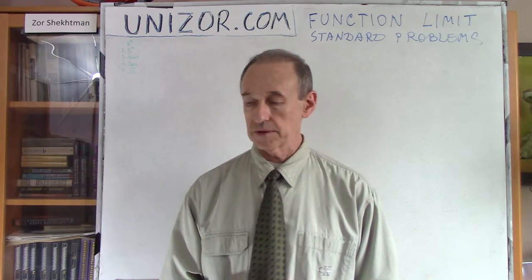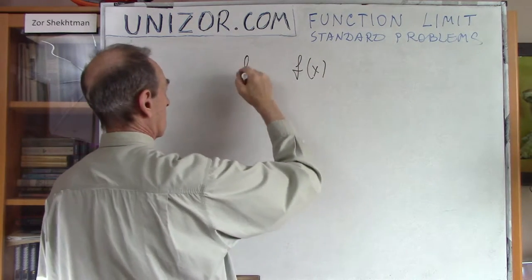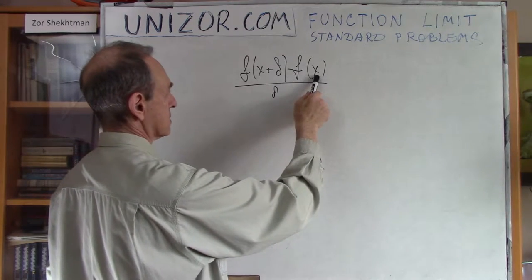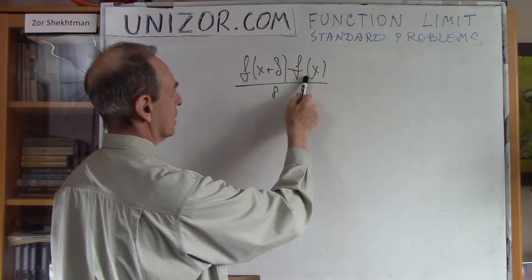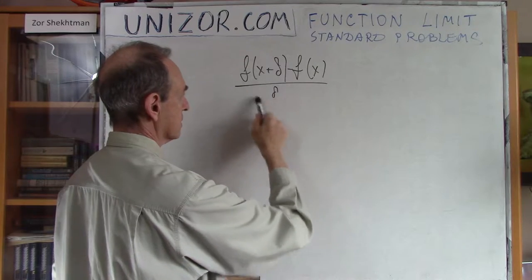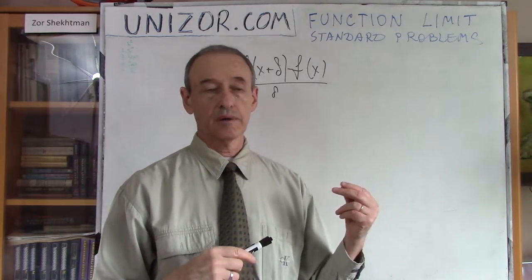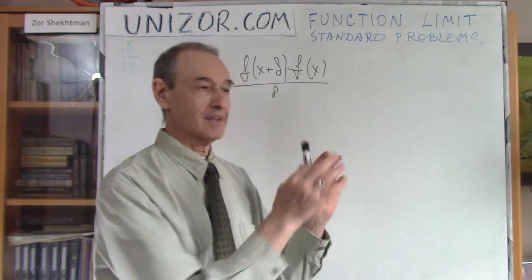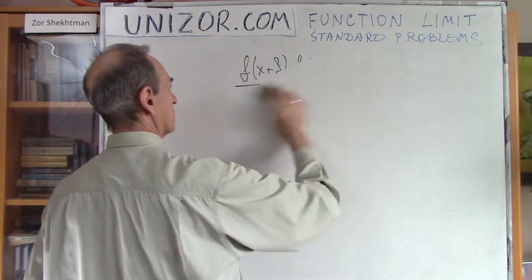Another consideration for calling them standard is that I will primarily be dealing with limits of this type: if you have an argument x and give it an increment delta, you look at the increment of the function — f(x+delta) minus f(x) — divided by the increment of the argument delta. I will mostly deal with these because they are the fundamental approach to derivatives. Derivatives are all based on limits of this type, so these particular limits are the foundation for derivatives, which will be the next topic.